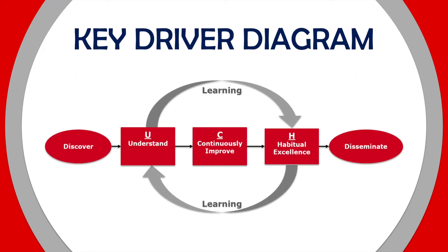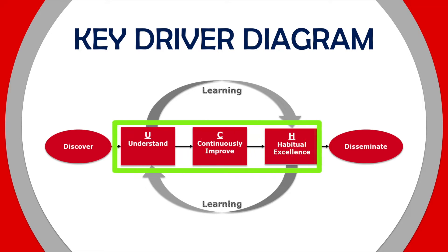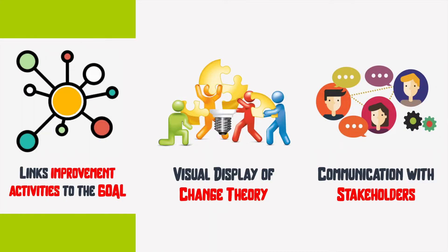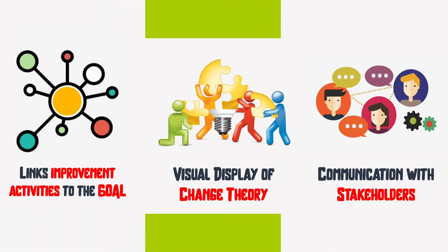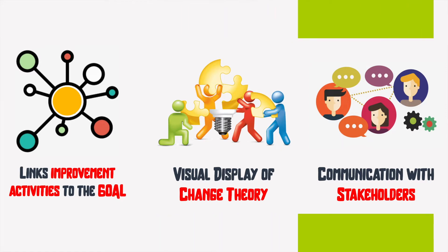We start building a key driver diagram as we understand the problem, and it evolves throughout the improvement journey. A key driver diagram shows the connections between the goal and specific improvement activities. It's a visual display of the team's theory on what drives or contributes to the project aim. It also serves as a communication tool to a wide range of stakeholders on what the team has tested, plans to work on, and has completed.